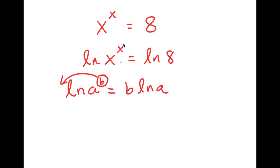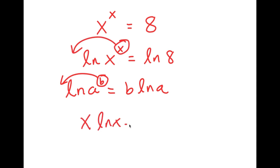So in this case, I have ln x to the power of x, and I can move x to the front. So now I get x times ln x is equal to ln 8.